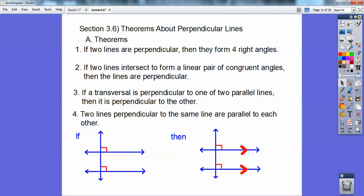If lines perpendicular to the same line are parallel to each other. So if these lines are perpendicular to this line right here, this transversal, then these lines got to be parallel to each other. That's what that one's saying.